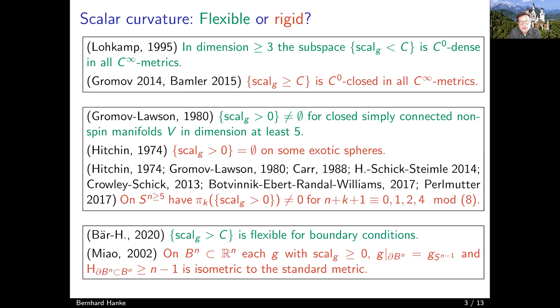These are general flexibility examples. Now let me turn to scalar curvature. On this slide we have some examples — some already occurred in recent talks and some will occur in my talk or later talks. We can ask: is scalar curvature flexible or rigid? Do we have the possibility to deform things easily, or are there obstructions to realizing certain kinds of restrictions on scalar curvature?